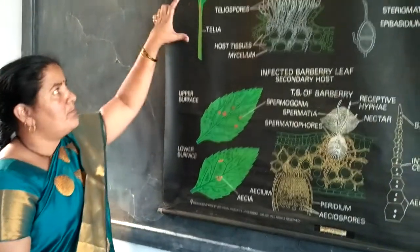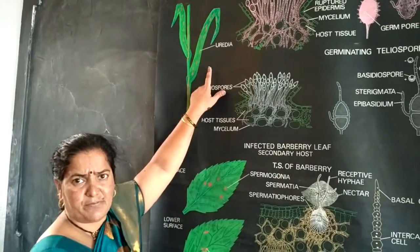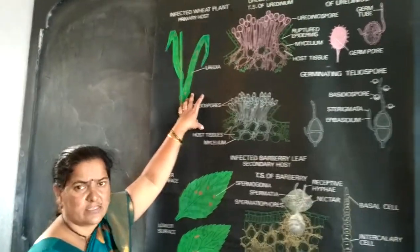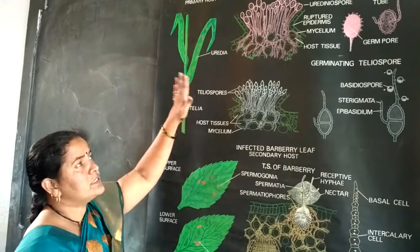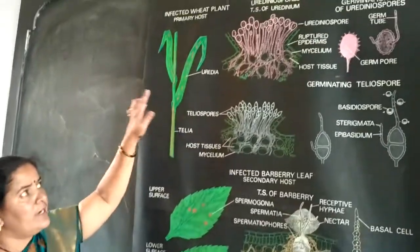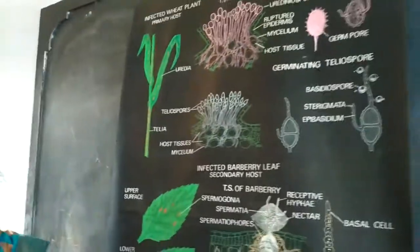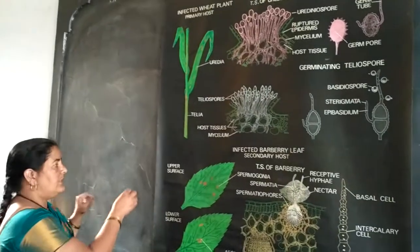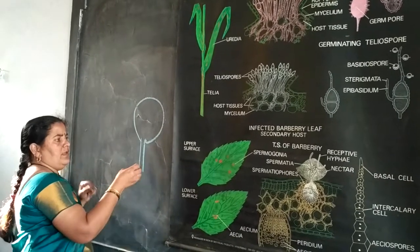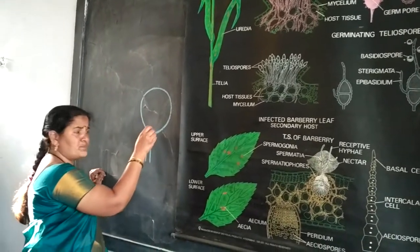On the primary host, Puccinia produces brown colored patches or pustules on the leaf surface, which appear as a rust staining, and hence that disease is called rust disease. On the primary host, Puccinia completes its life cycle with the help of the uredial stage and telial stage. In the uredial stage, the uredospores are produced. These uredospores are orange in color and they are unicellular, uninucleate spores. They appear as a bracket-shaped structure and the head of the spore is spherical.